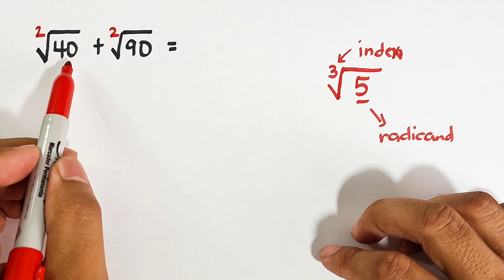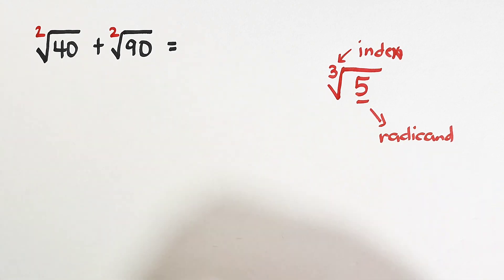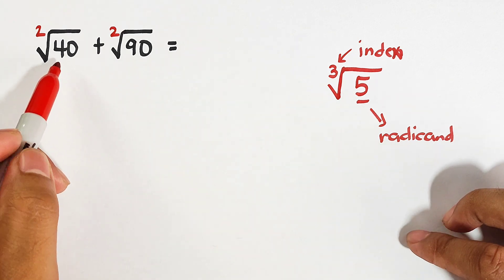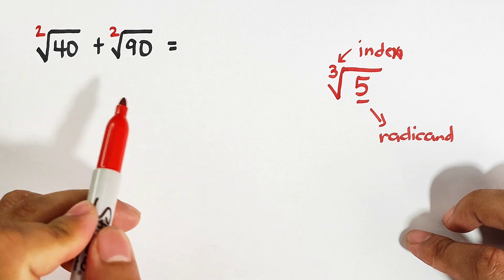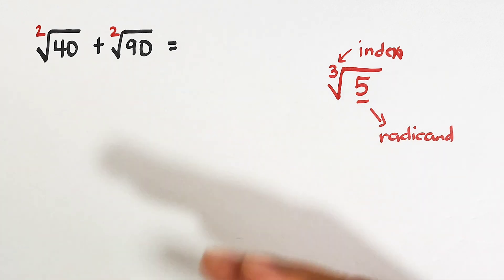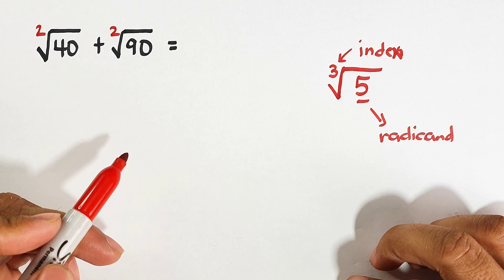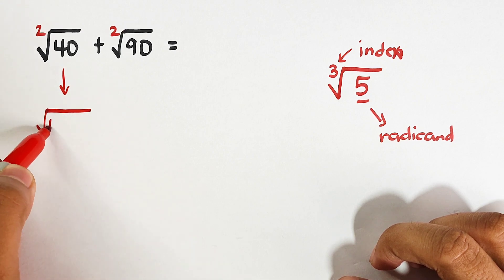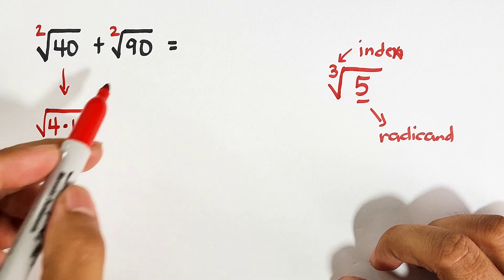The main problem here is that we have 40 and 90 as the radicands, and they are different. So how are we going to add them? What we need to do is think of factors of 40 and factors of 90 — in other words, we need to simplify them first to see if we can add them at the end. What are the factors of 40 in which one of them is a perfect square?